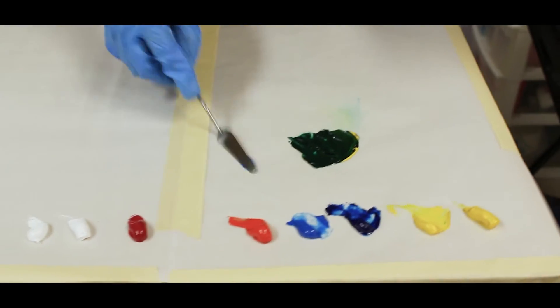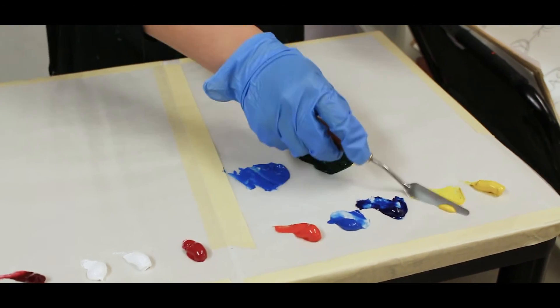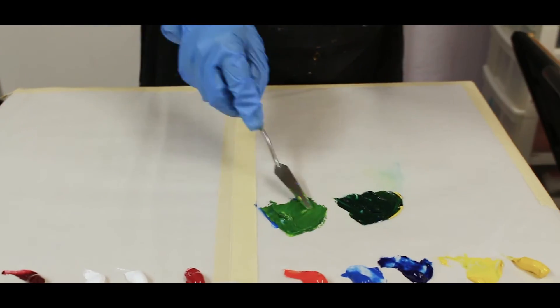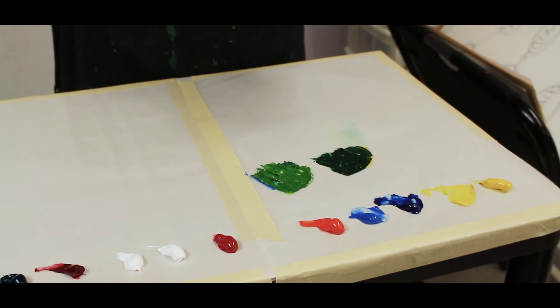Here is cerulean blue and we're going to use primary yellow and mix more of a grassy green here. And those are your secondary greens.